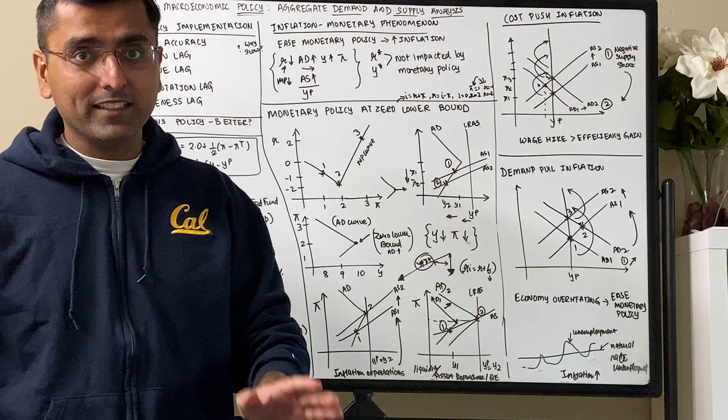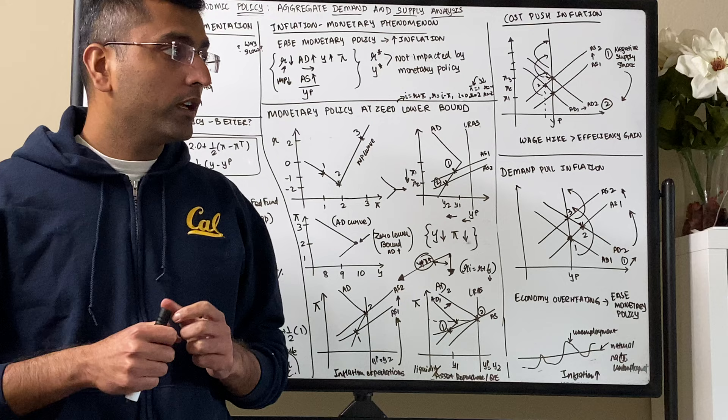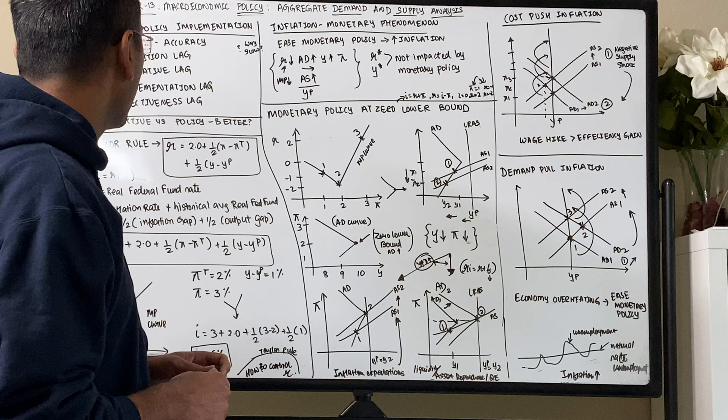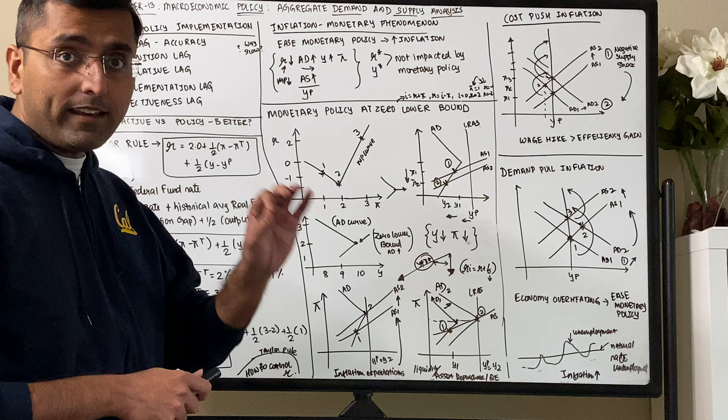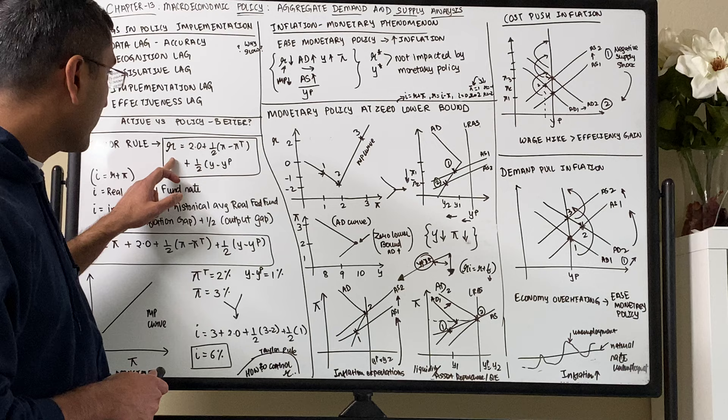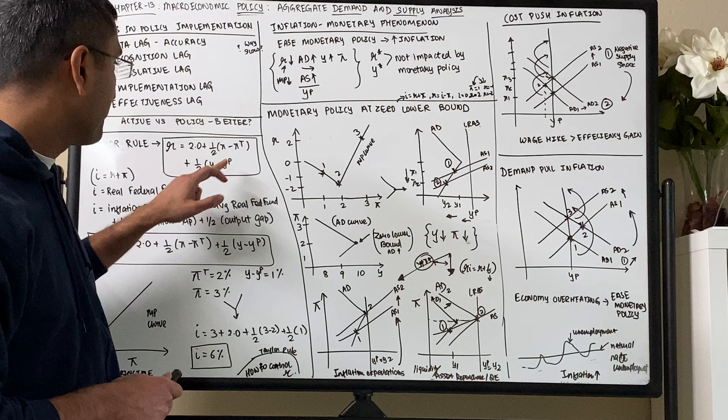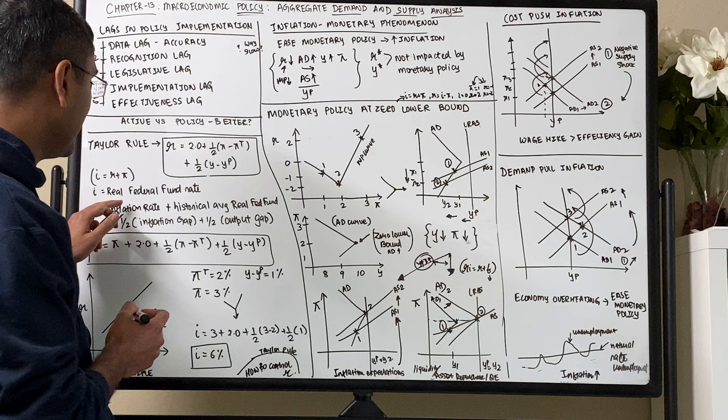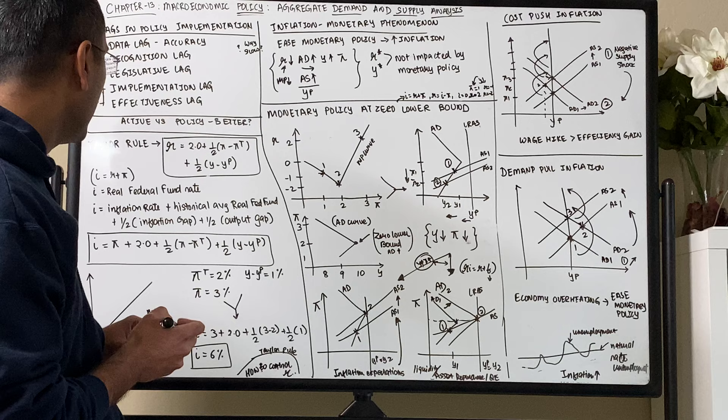In this Part 2, we're going to continue to figure out what's going on in the mind of a Federal Reserve Chairman. We saw how they have a dual mandate in Part 1, and we ended Part 1 with Taylor's Rule. Taylor's Rule is R equals 2.0 plus half of the inflation gap plus half of the output gap, where 2.0 is basically the average historical rate.